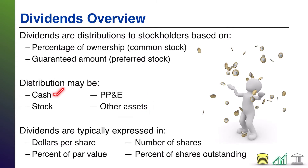Distributions of dividends may take many forms. The most common is cash — that is absolutely the most common dividend you'll see. However, second to that, you might see companies do what's known as a stock dividend, where they issue more stock rather than cash.